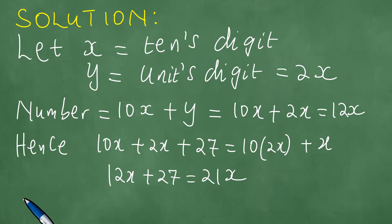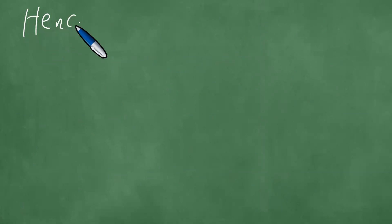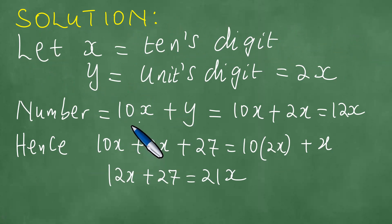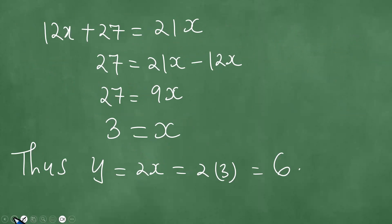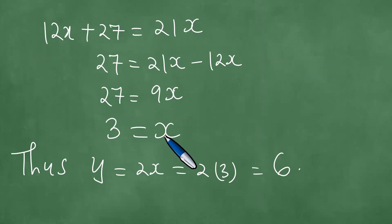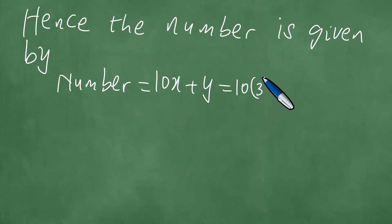What is the conclusion here? The conclusion was that we need to find the number. Hence, the number is given by 10x plus y. We substitute x is 3 and y is 6, so this is exactly 36. That is the number.